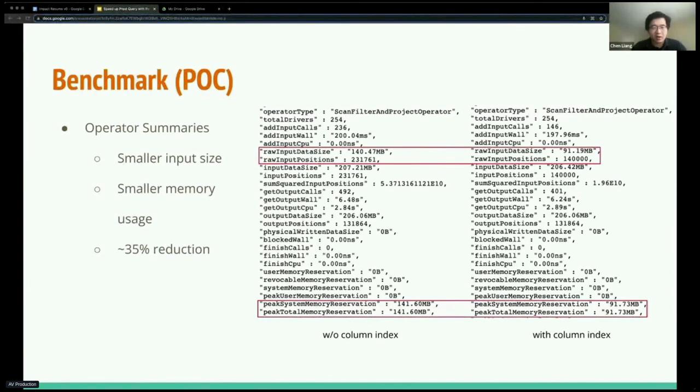But without column index, it had to read 140 megabytes and 231k rows. While with column index, it only needed to read 91 megabytes and 140k rows. So this was again about 35% reduction in terms of both size and rows.